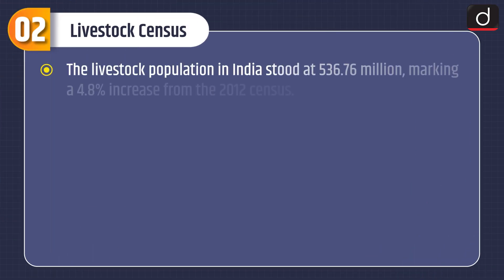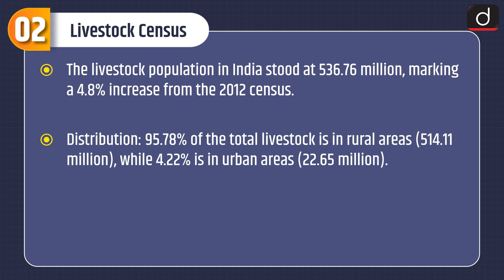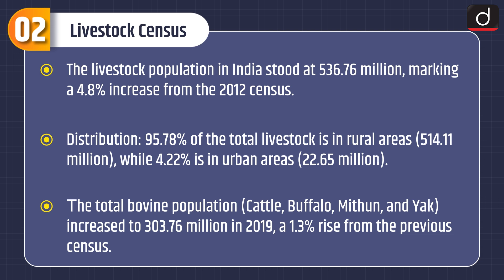The livestock population in India stood at 536.76 million, marking a 4.8% increase from the 2012 census. About 95.78% of the total livestock is in rural areas, i.e. 514.11 million, while 4.22% is in urban areas, i.e. 22.65 million. The total bovine population — cattle, buffalo, mithun and yak — increased to 303.76 million in 2019, a 1.3% rise from the previous census.